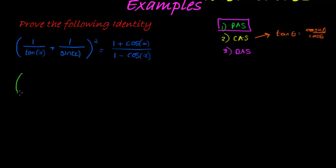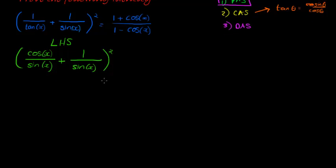1 over tan theta is cos of x over sin of x plus 1 over sin of x squared. Okay, this is our left hand side. We're working on the left hand side, so let's just say that. From the beginning we're working on the left hand side.